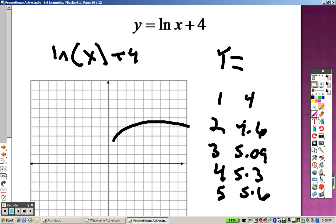So we get the rough idea. Let's see how the graph looks. 1, 1, 2, 3, 4. 2, 4.6. 3, 5 point whatever. There's 0.9. 4 is 5.3. And 5 is 5.6. The point is, it's just kind of gradually going up.